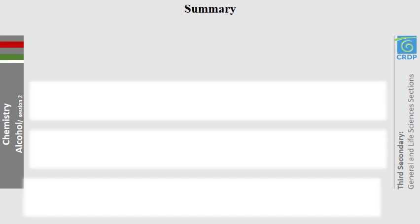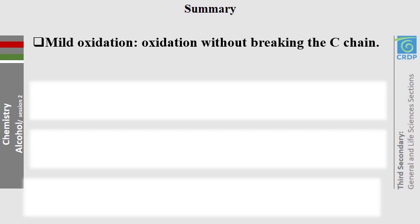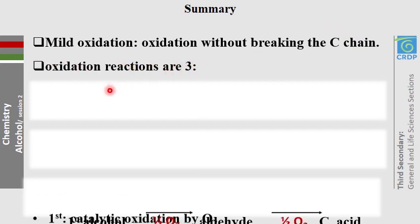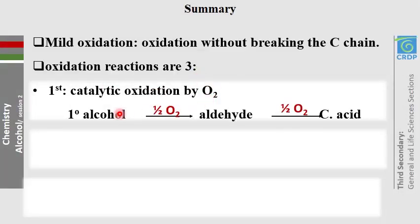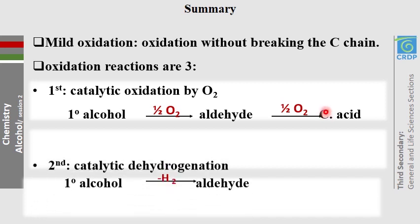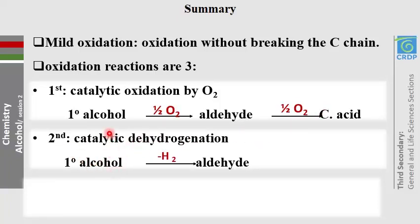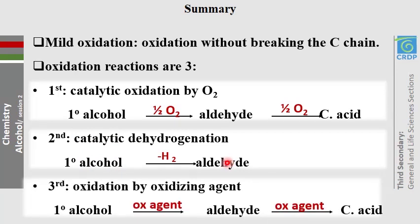Those are all the information needed in this session. Let us review: we covered mild oxidation, which occurs without breaking the carbon chain, and three oxidation reactions. First, catalytic oxidation in presence of oxygen — primary alcohol gives aldehyde, and with more oxygen gives carboxylic acid. Second, catalytic dehydrogenation — primary alcohol gives aldehyde. Third, oxidation with oxidizing agent — gives aldehyde with limited agent, or carboxylic acid with excess agent.